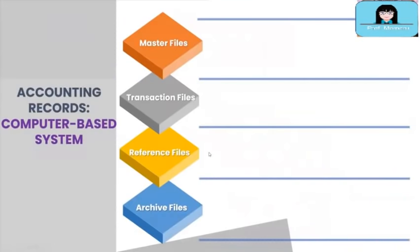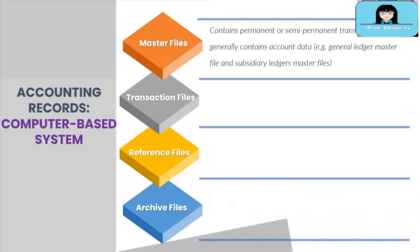Now we're done with the accounting records under the manual system and will tackle the digital equivalents. In a computer-based accounting system, the digital equivalent is called a file. There are four types of files: master files, transaction files, reference files, and archive files. Master files contain permanent or semi-permanent transaction data; they generally contain account data. The best examples are the general ledger master file and subsidiary ledger master file.